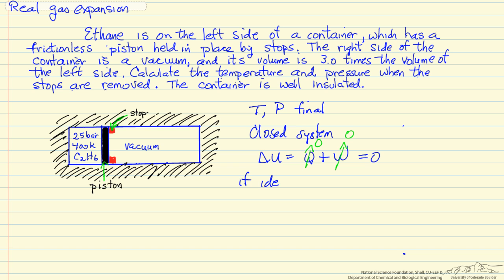If this were an ideal gas, delta U equals zero means delta T equals zero. However, because it's a real gas, that's not the case. We're changing the interactions between the molecules as we lower the pressure.